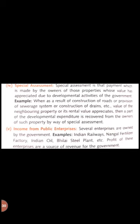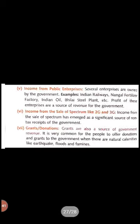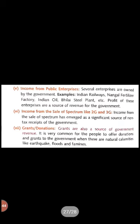Income from public enterprises is the income the government receives from government or public enterprises, such as railways, Indian Oil, Bhilai Steel Plant, and other government companies. Income from sale of spectrum — the government charges fees from telecom companies for providing licenses, through auction of 2G and 3G airwaves. Grants and donations come from the general public during natural calamities — for example, currently many celebrities are paying money into funds due to coronavirus.